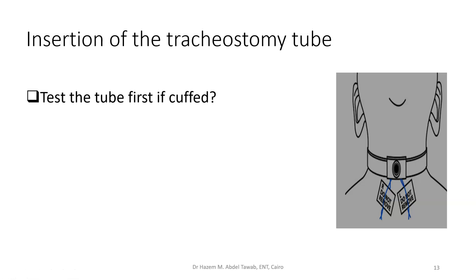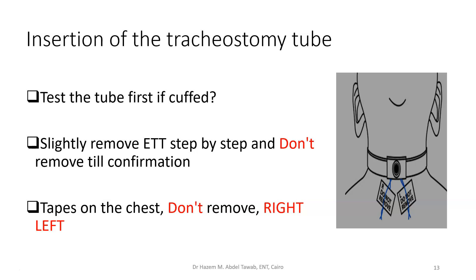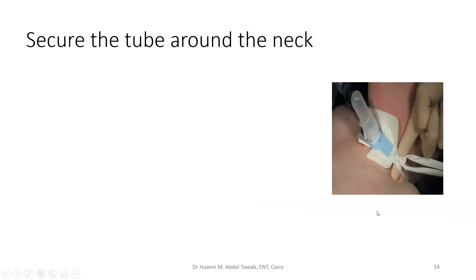Before inserting the tube, test the cuff. Most tracheostomy tubes used in children are uncuffed. However, if using a cuffed tube, test the cuff inflation outside before insertion to confirm it inflates well. Then gently withdraw the ETT step by step, and do not remove it completely until you confirm the tracheostomy is securely positioned — confirmed by the anesthesia doctor through auscultation of chest entry and capnogram verification.